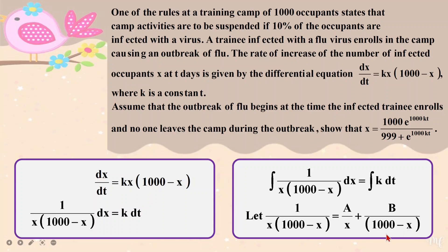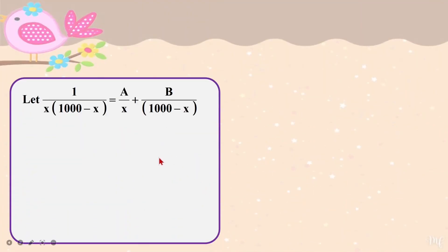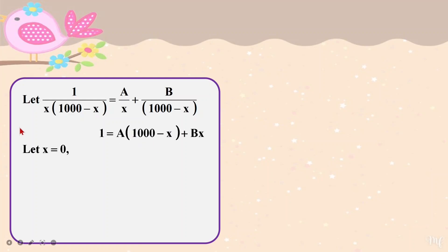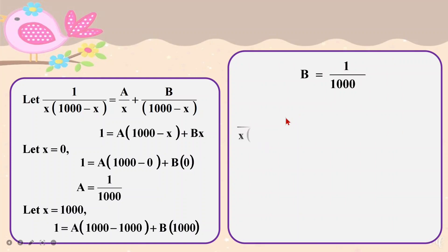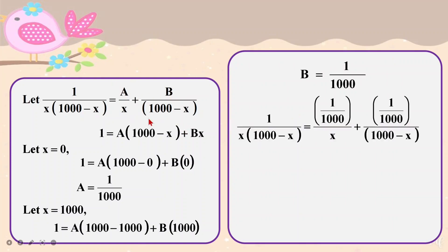If you haven't seen the partial fraction integration video I created, please help yourself. We are going to solve the partial fraction — partial fractions were covered in semester one, so if you don't remember how to do it, you can go to my semester one playlist and find the partial fraction videos there. You will find the value of a and b by creating your equation of a over x and b over 1000 minus x.